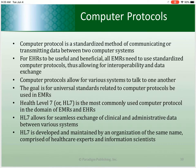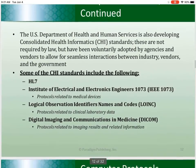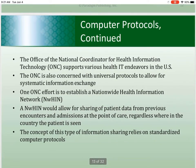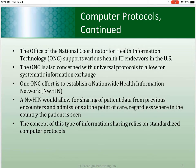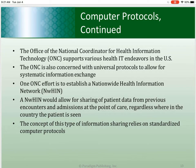The ONC published a 10-year vision to achieve an interoperable health IT infrastructure with three goals. From 2015 to 2017, the goal was to send, receive, find, and use priority data domains to improve health quality and outcomes. From 2018 to 2020, the goal was to expand data sources and users in the interoperable health IT ecosystem to improve health and lower cost. From 2021 to 2024, the goal was to achieve nationwide interoperability to enable a learning health system with the patient at the center, continuously improving care through a real-time data process.